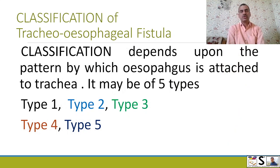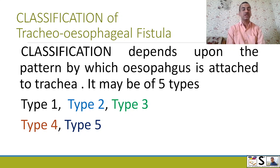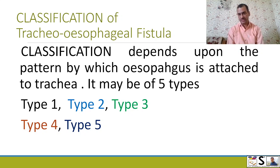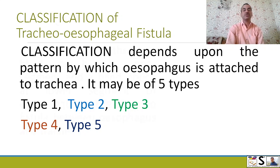Now, classification of TEO fistula. Classification depends upon the pattern by which the esophagus is attached to the trachea. Depending on this system, it is of five types: Type 1, Type 2, Type 3, Type 4, and Type 5. We will discuss these types one by one.